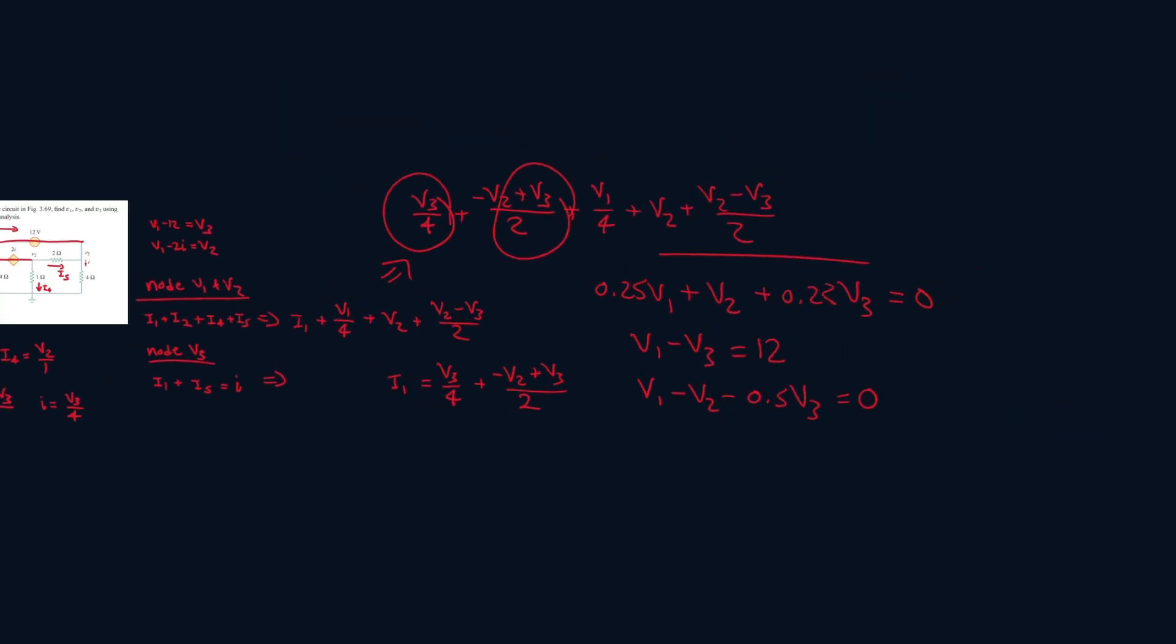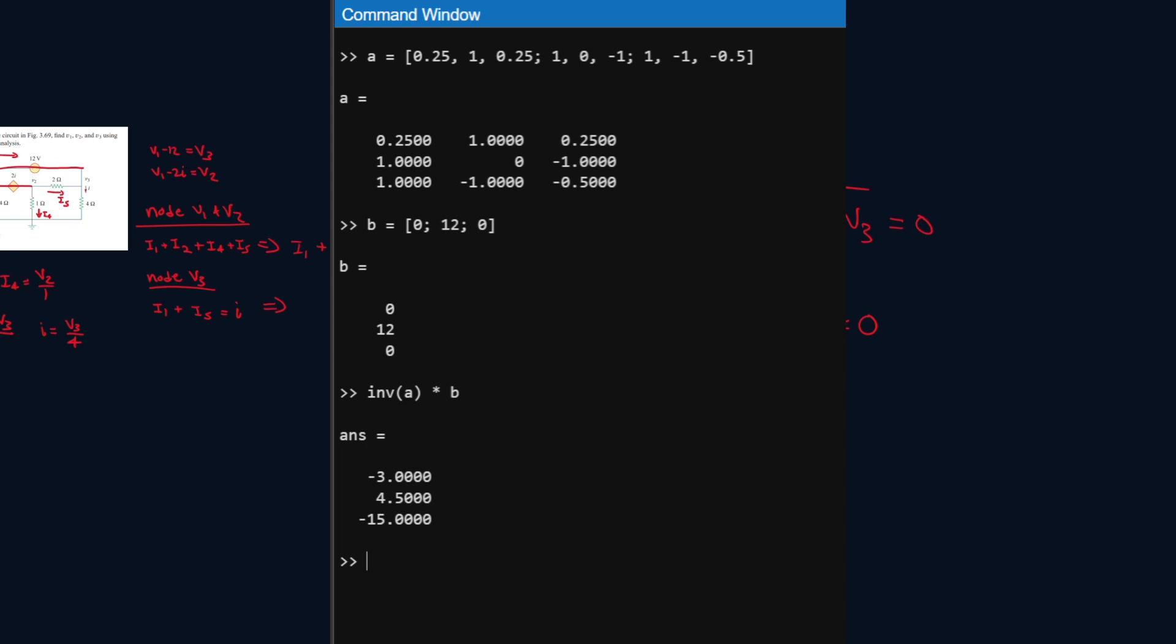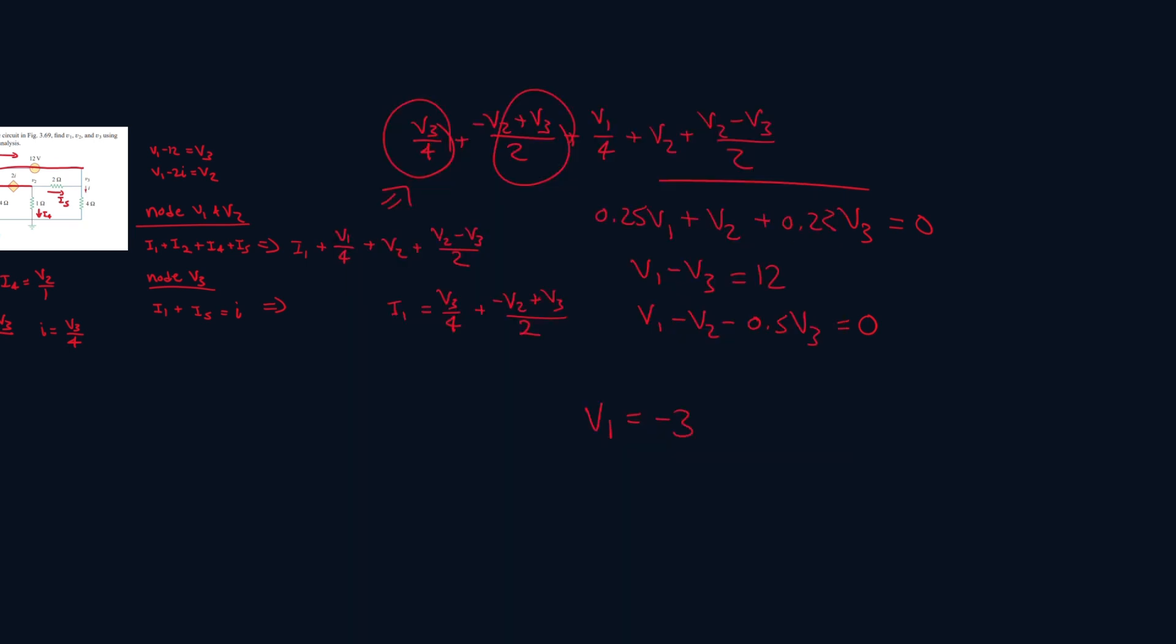Now we have three equations and three unknowns. Now you can plug each of them into each other, or you can solve, or you can use MATLAB. And you will get the following. v1, you get minus 3 volts. v2, you get 4.5 volts. And v3, you get 15 volts. So yeah, those are your final answers.